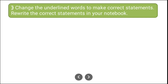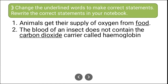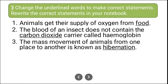Now we have a 'correct the statement' section. The five statements to correct are: (1) Animals get their supply of oxygen from food. (2) Blood of an insect does not contain carbon dioxide carrier called hemoglobin. (3) The mass movement of animals from one place to another is known as hibernation. (4) Gills are the special organs with which all mammals breathe. (5) Mammals like ants and cockroaches crawl on their legs.